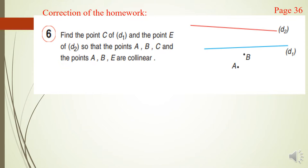Let's correct our homework, which is exercise number 6 and 7, page 36. In exercise number 6, find the point C of D1 and the point E of D2 so that the points A, B, C and the points A, B, E are collinear.